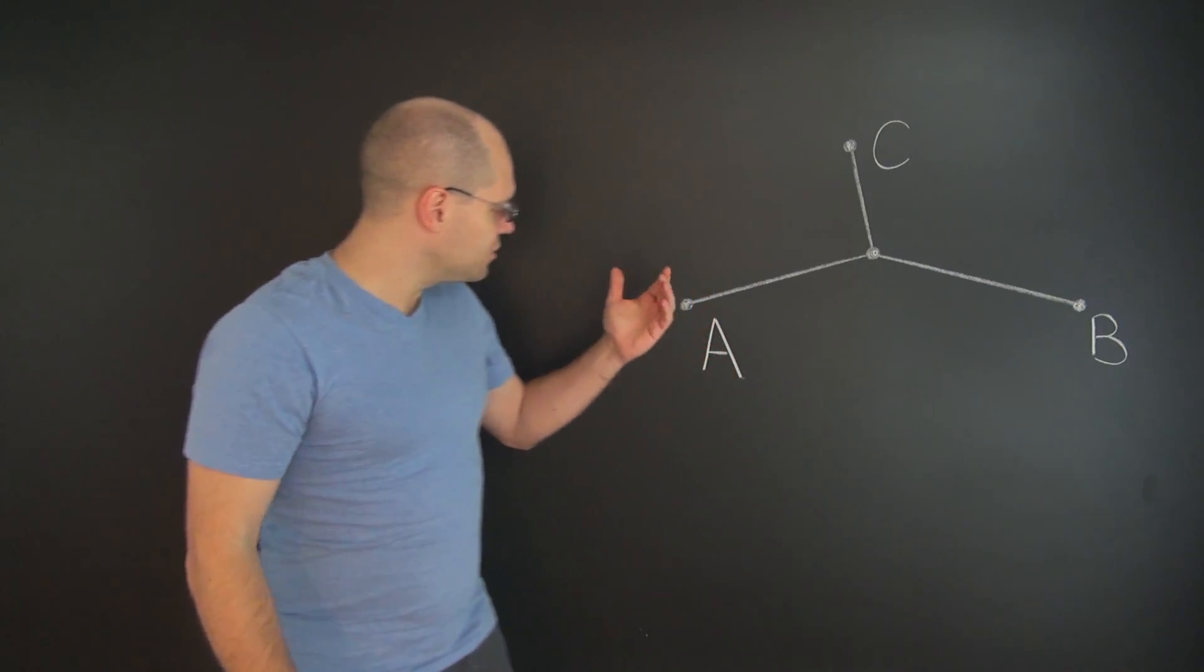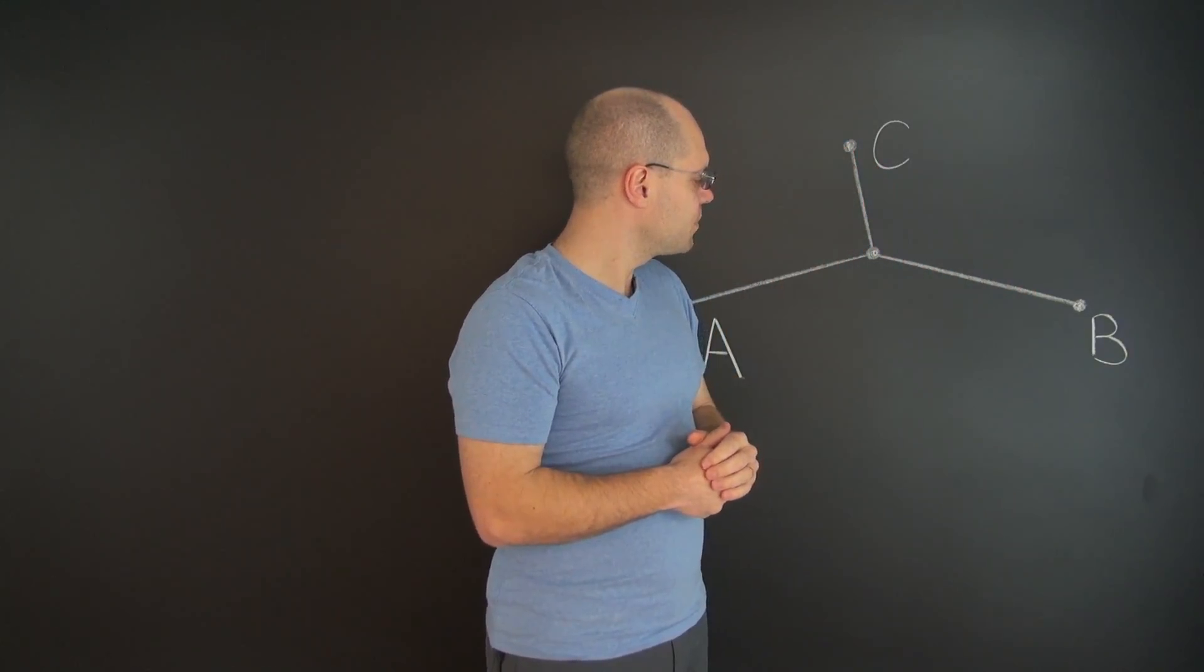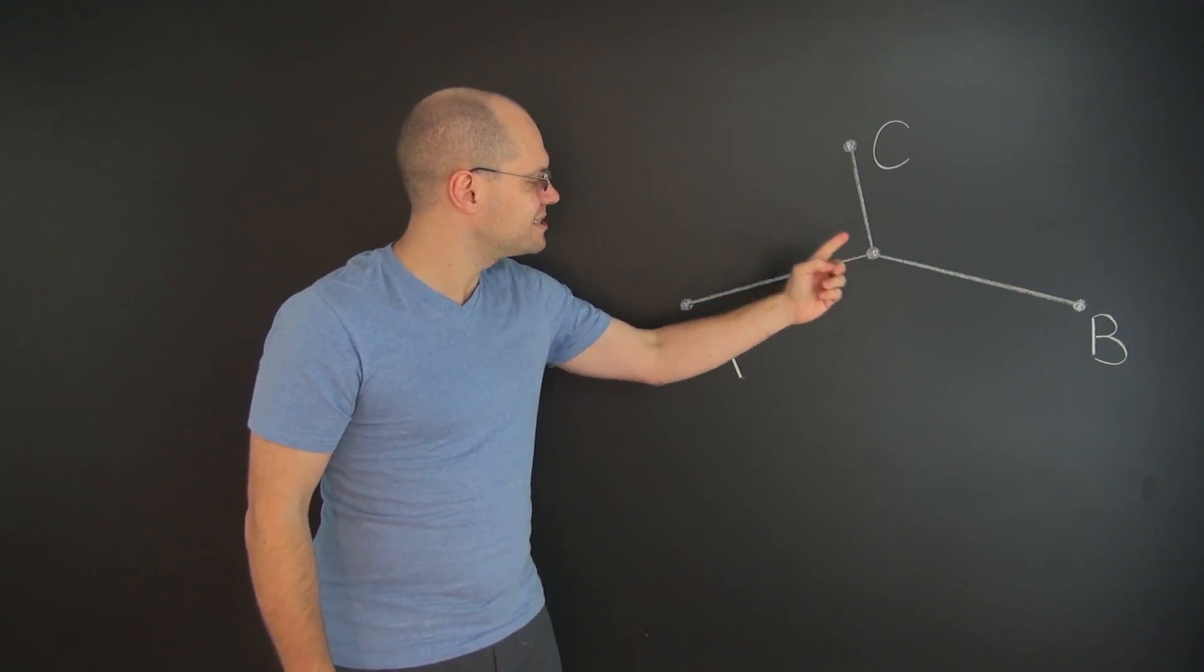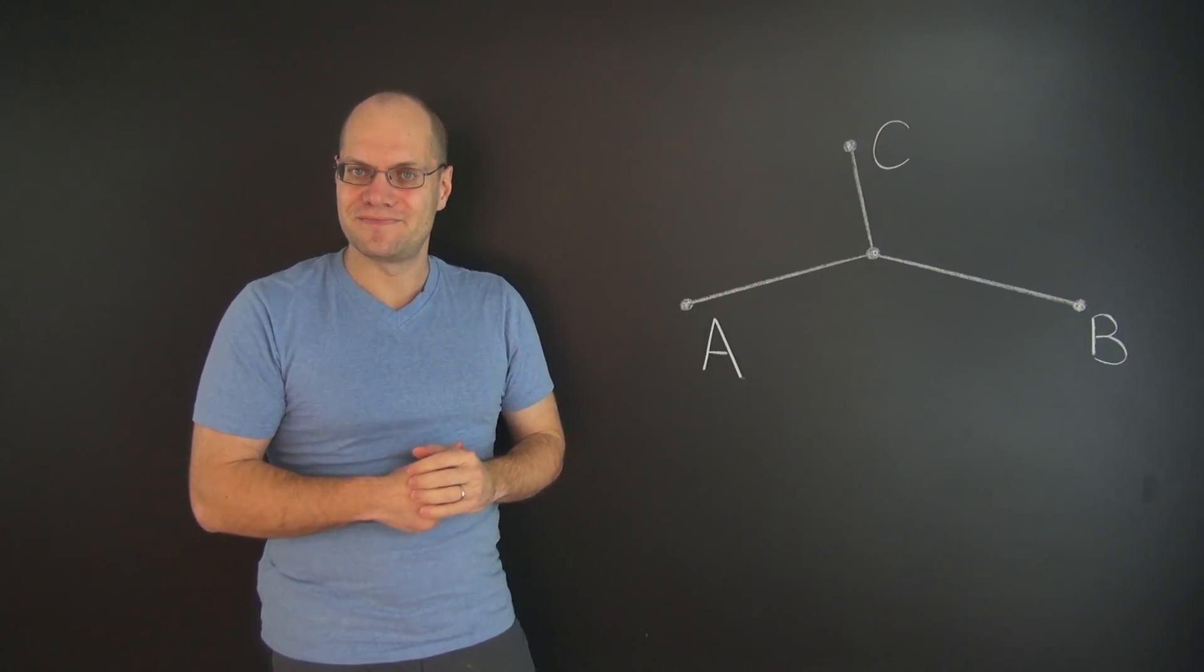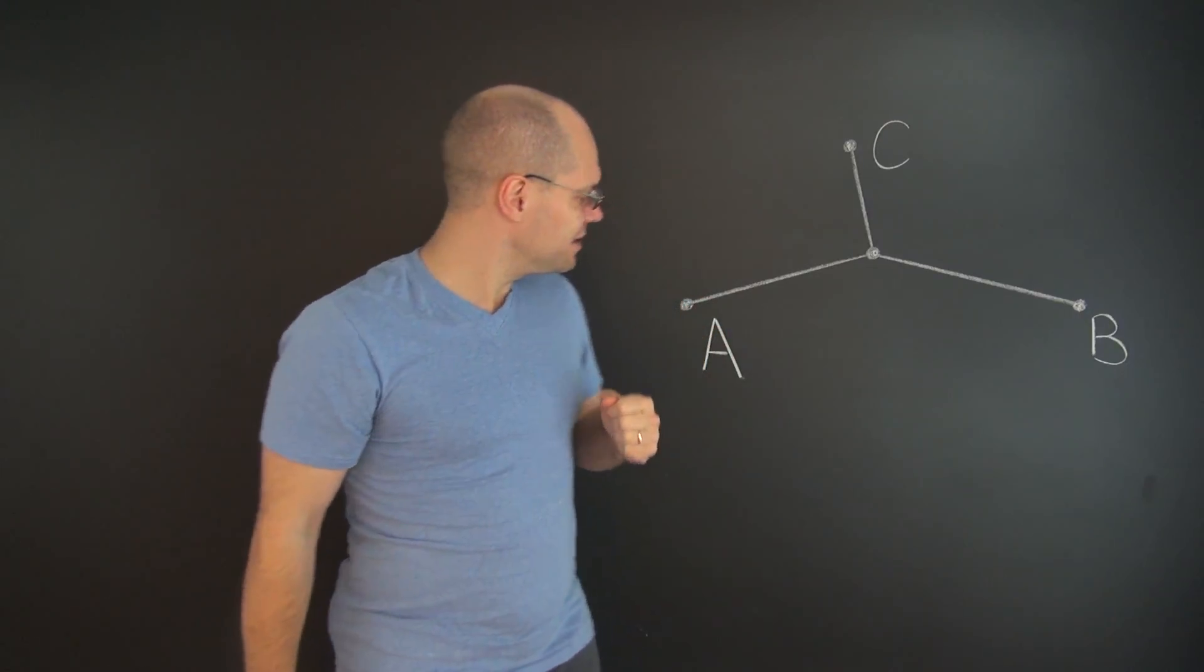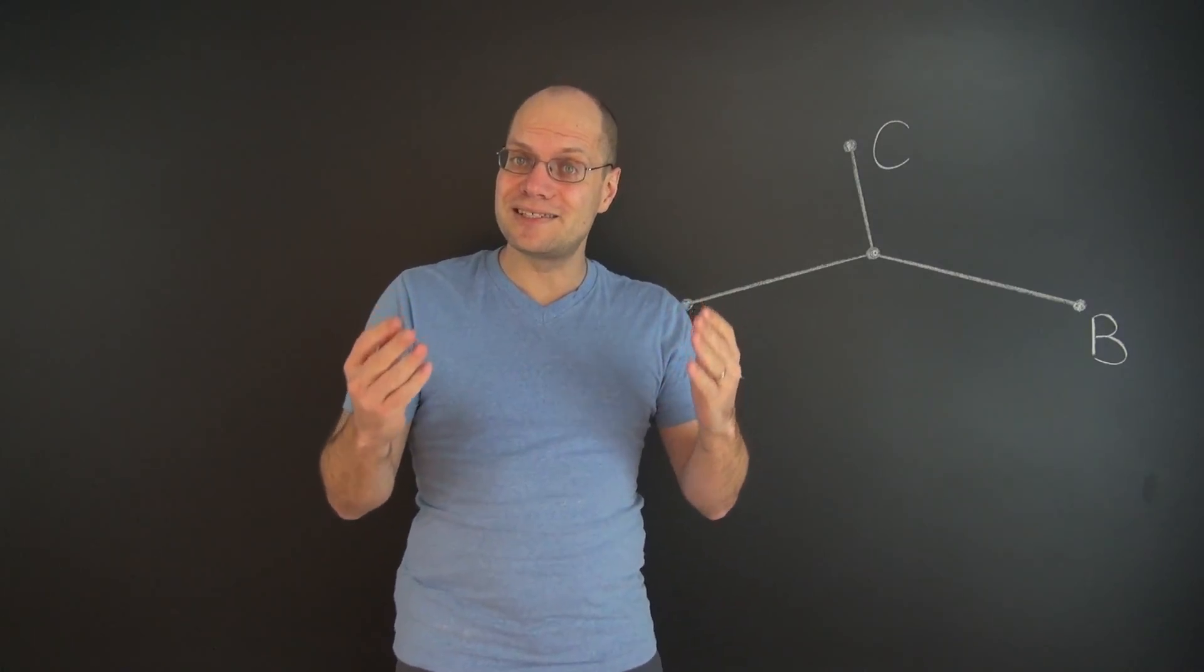And it is this. Given three points in the plane, a, b, and c, to find the point so that the sum of the distances to a, b, and c is as small as possible. So I think you can see the similarity to Heron's problem. And of course we would like to solve it by the same approach.